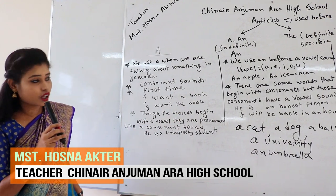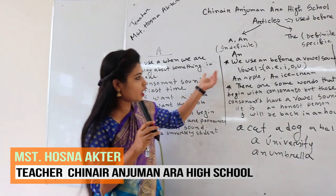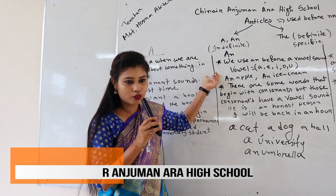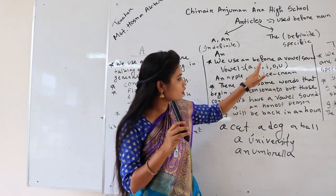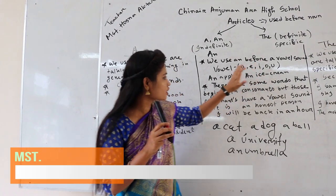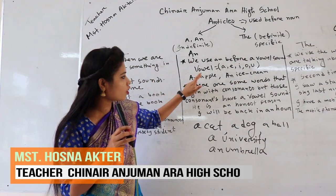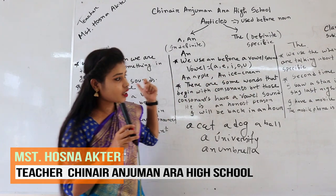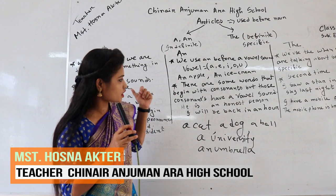Now let's try to know how to use 'an'. We use 'an' before a vowel sound. The vowels are a, e, i, o, u. For example: an apple, an ice cream, an eye, an orange, an umbrella, and so on.